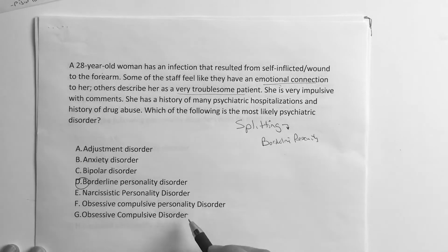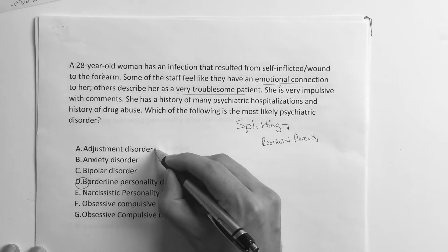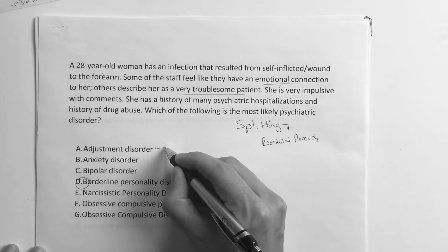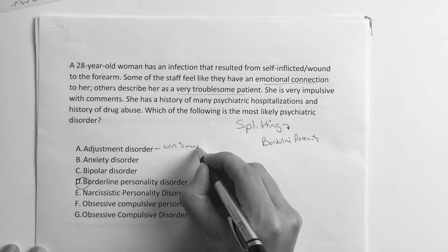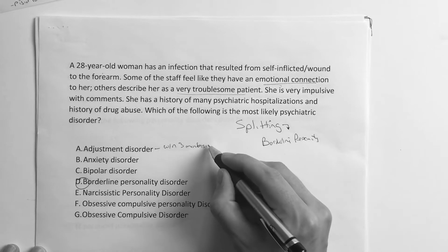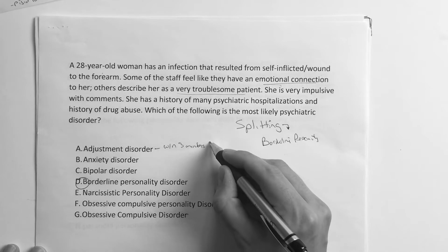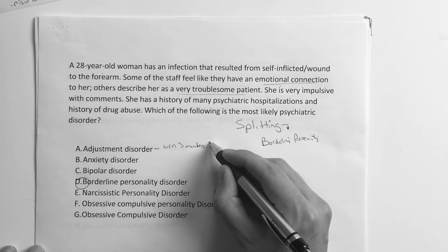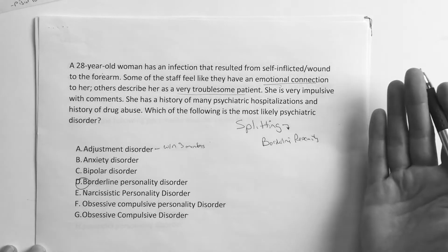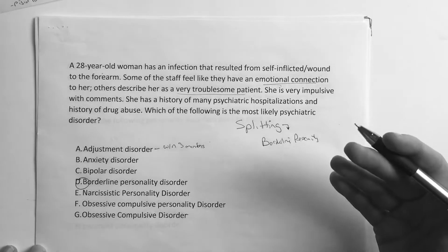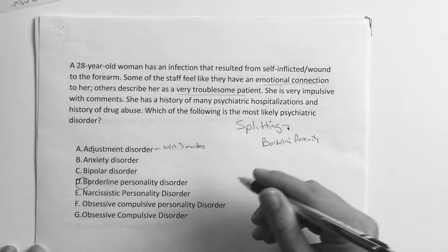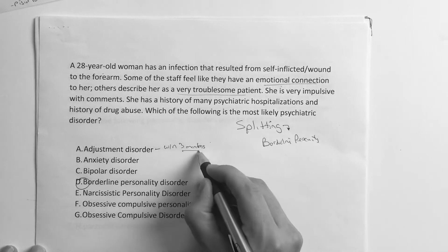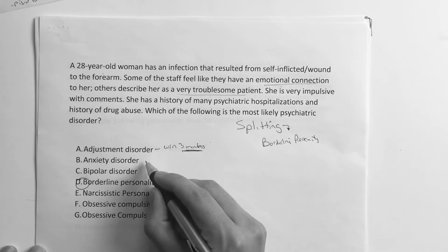When we look through the answer choices, remember we've got to know all of these. Adjustment disorder: the stressor has to be within three months. This is a very common one that comes up with inpatient scenarios — it's just an overreaction to something like a divorce. They're significantly impaired, but the stressor has to be within three months.